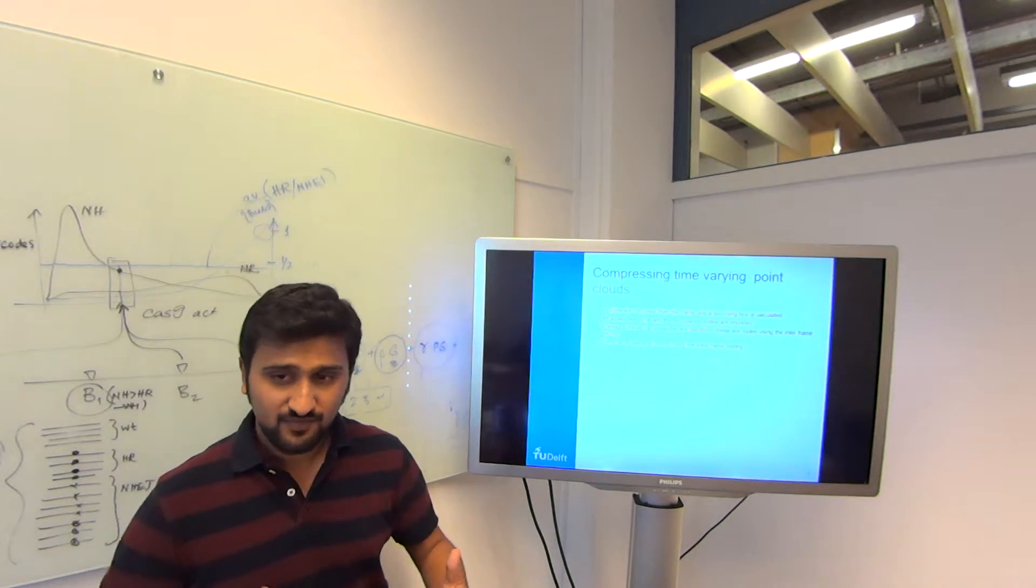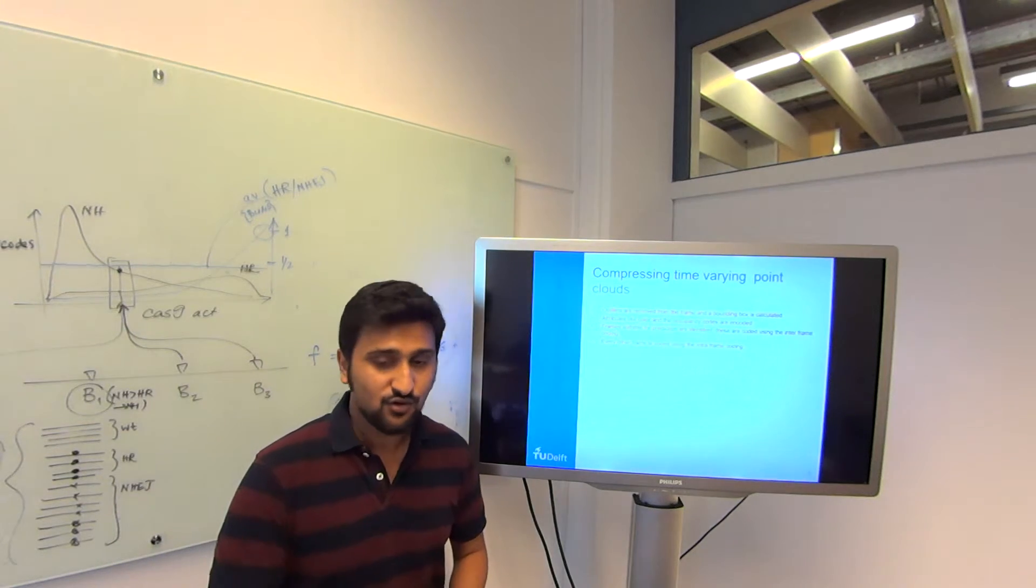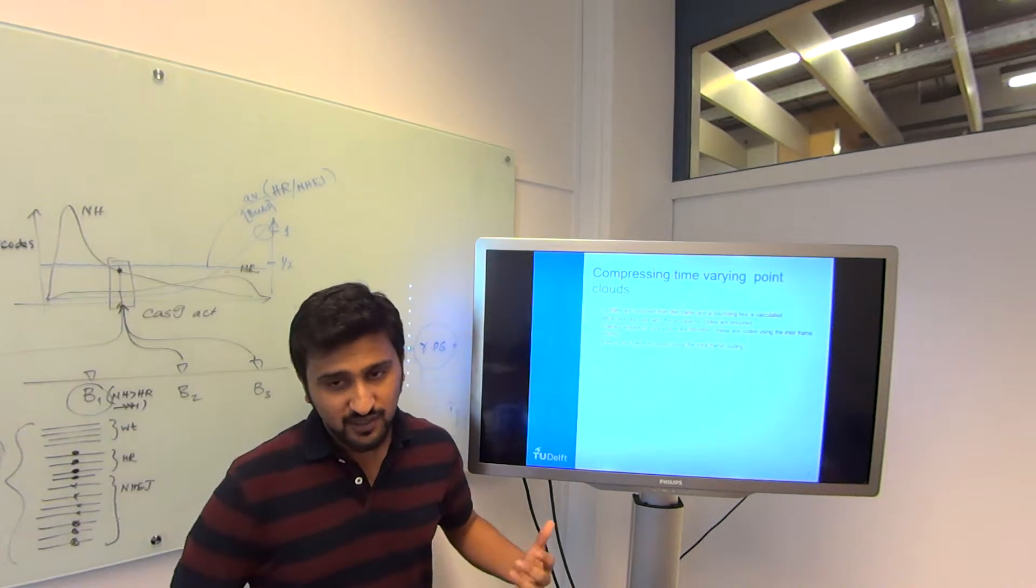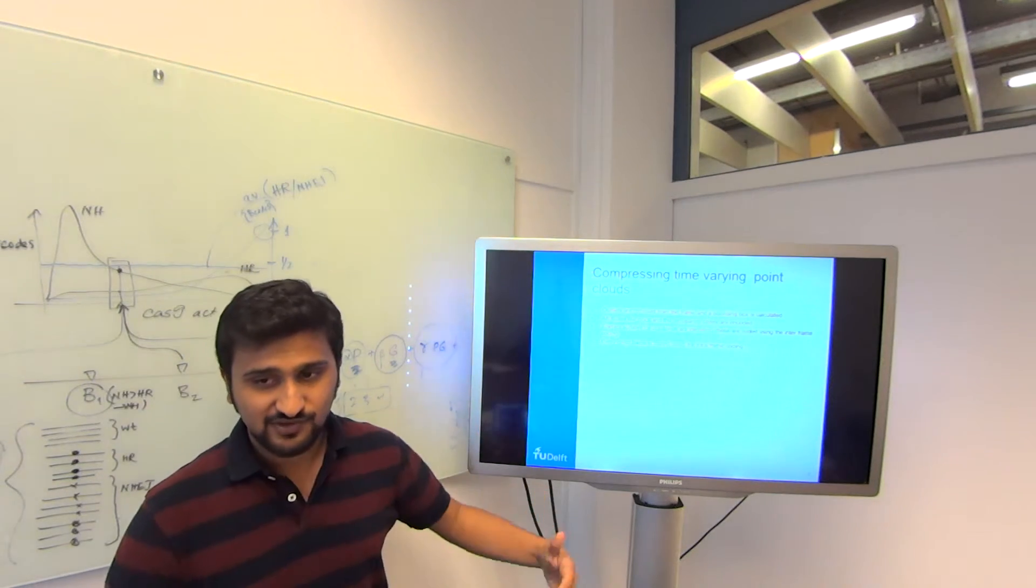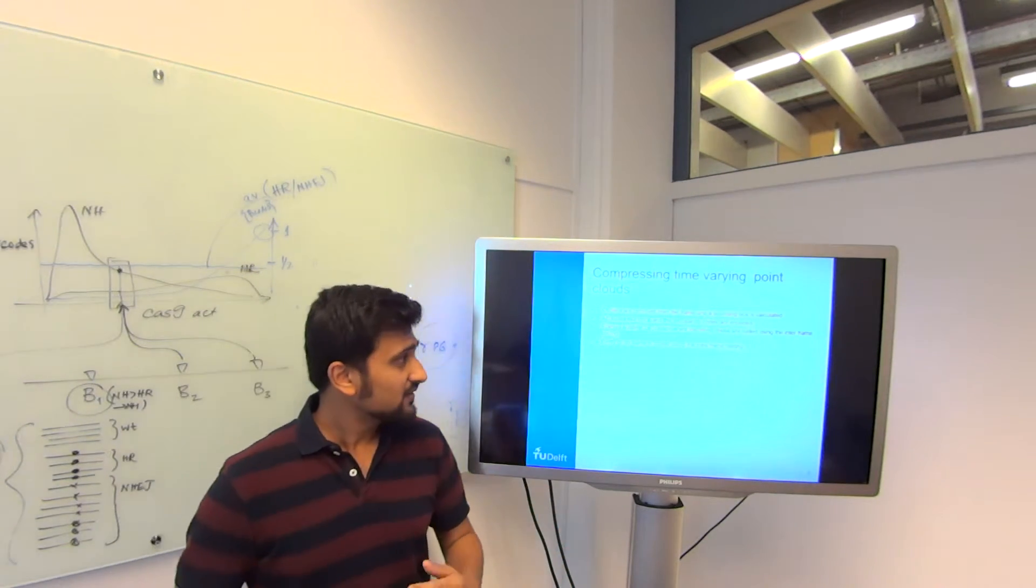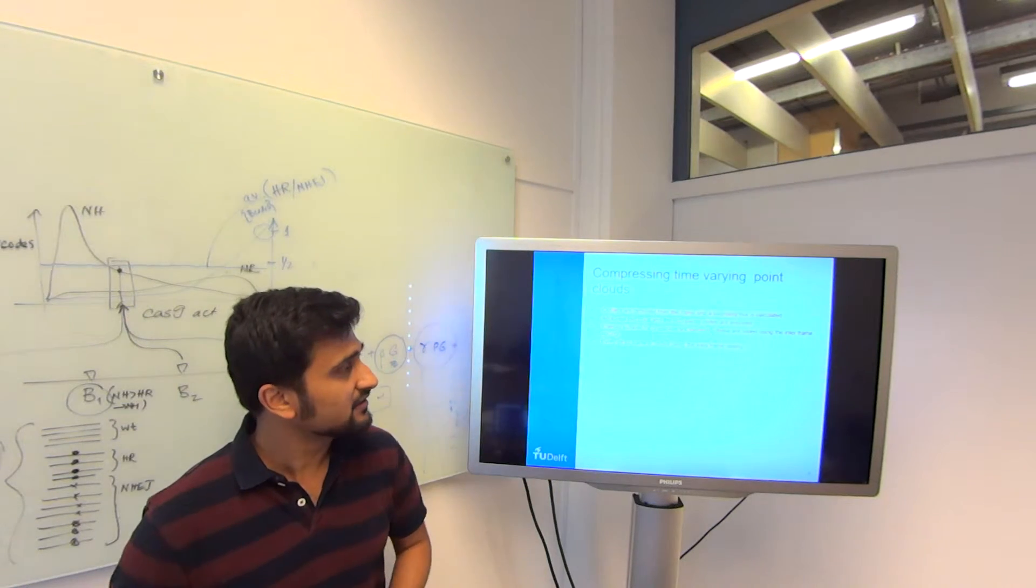This is called the intra-frame where you encode one frame at a time. The other part because it's time varying is where you predict subsequent frames. This is called the inter-frame coding.